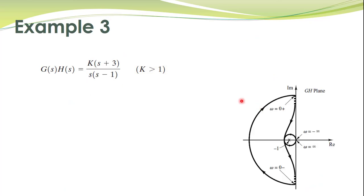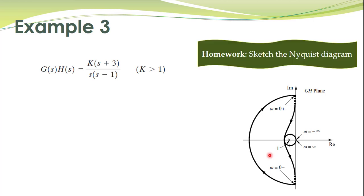This is your homework: sketch the Nyquist plot for the given transfer function, count the number of encirclements, and determine the stability of the closed loop system. The next lecture will address a question raised in class — how does the Nyquist criterion help determine the degree of stability, that is, how to determine relative stability. We shall discuss it in the next lecture.